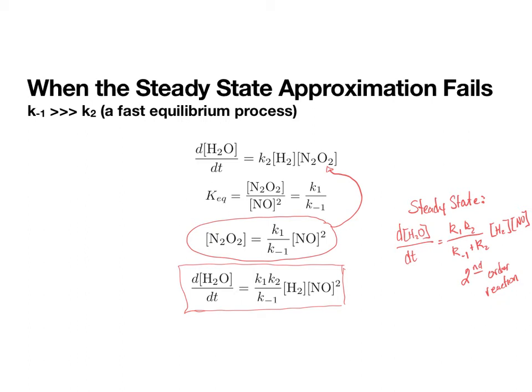With the fast equilibrium, this comes out as a third order reaction, because we have first order in terms of hydrogen, second order in terms of NO, so my overall order is going to be 1 plus 2 or 3.